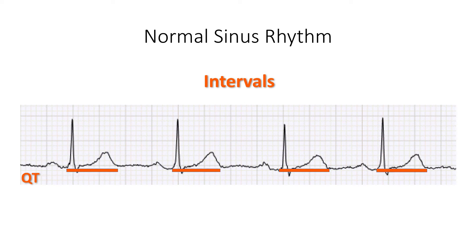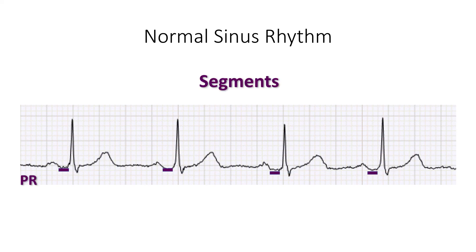The QT interval represents the time it takes to depolarize and then to repolarize the ventricles. In other words, this is the time it takes for the ventricles to fire and then reset. The QT interval is prolonged by environmental, genetic, or medication-related reasons, and we'll discuss the implications of a long QT interval during one of our later case examples.